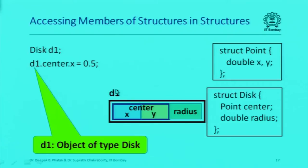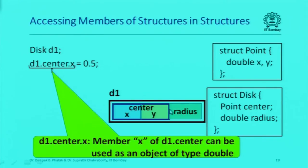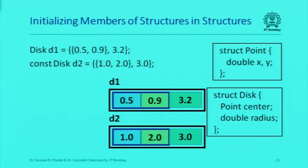d1 is the object of type disk, so d1.center is the member named center of d1, and d1.center.x is the member named x of the member named center of d1. So it's just going down the hierarchy.